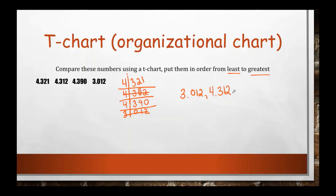Now we look for our next number. Put our comma in. We know the fours are the same, the threes are the same. Now we look again — we have a two and a nine. What's lower between two and nine? Two. So our next number is four and three hundred twenty-one thousandths. And our largest remaining number is four and three hundred ninety thousandths.